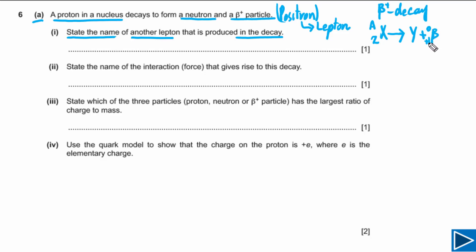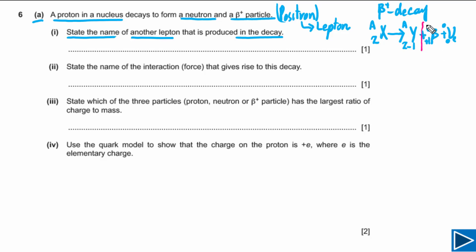In this case the atomic number will be Z minus one because of the plus one charge, and the mass number will not change. Since the beta plus particle is an anti-particle, an electron neutrino will also be emitted. Neutrino has no mass number and no atomic number. So we can write down electron neutrino as the other lepton produced.